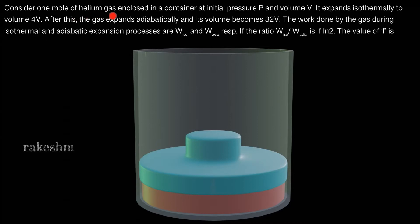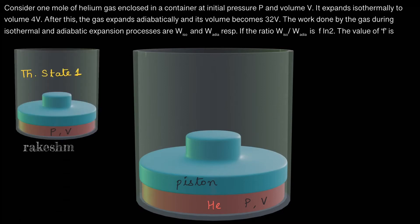Consider one mole of helium gas enclosed in a container at initial pressure P and volume V. We have a container here with the helium gas drawn in red so that it is easy to visualize. If the color is red the temperature is constant; if the color becomes blue, it means the temperature is decreasing. This gas is at pressure P and volume V, enclosed by a piston. We call this thermodynamic state 1, with coordinates P and V.